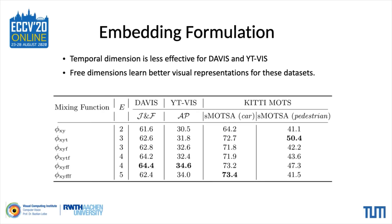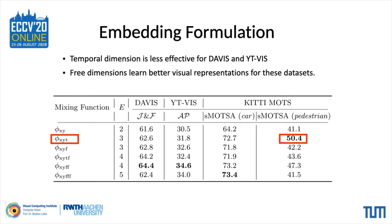We ablate the effect of different embedding mixing functions by evaluating on Davis, YouTube-VIS, and KITTI MODS. E in this table represents the dimensionality of the embeddings. For Davis and YouTube-VIS, the free dimension seems to help more than the temporal position coordinates. For KITTI MODS, especially for pedestrians, the spatiotemporal mixing function seems to perform the best. This can be attributed to the fact that objects in KITTI MODS appear and disappear randomly over time, while for Davis and YouTube-VIS the objects are present throughout the clip, rendering the temporal dimension less effective.